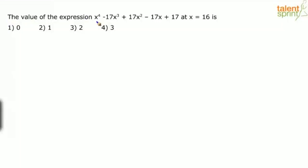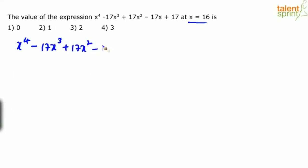Find the value of the expression x⁴ - 17x³ + 17x² - 17x + 17 at x = 16. The options are 0, 1, 2, 3. Now look at this polynomial — substituting x = 16 directly is going to make it very complex and calculation-intensive.